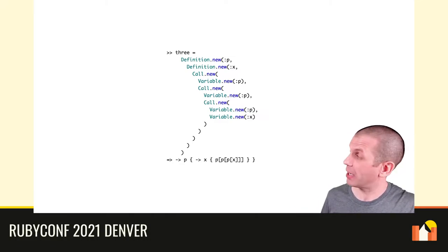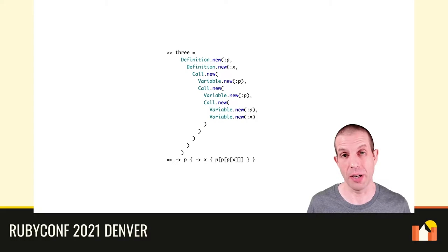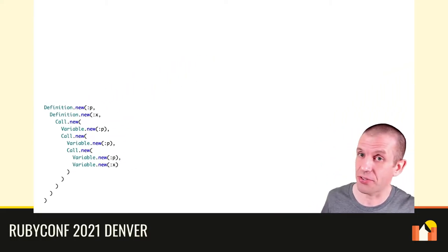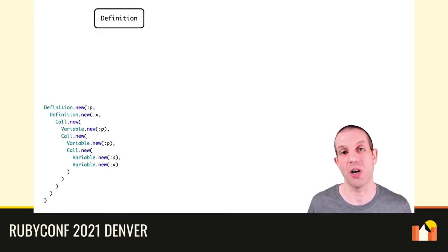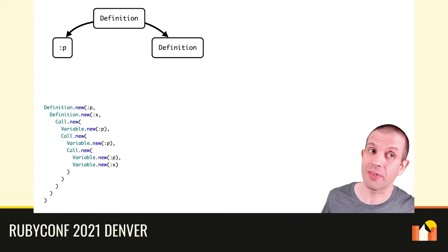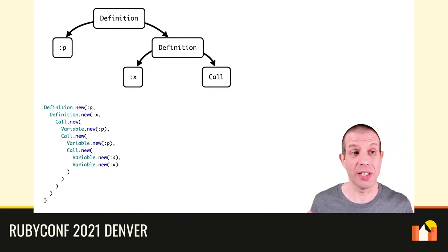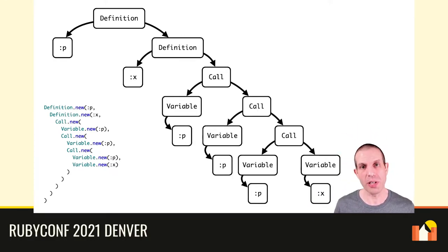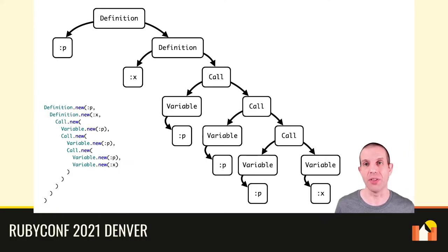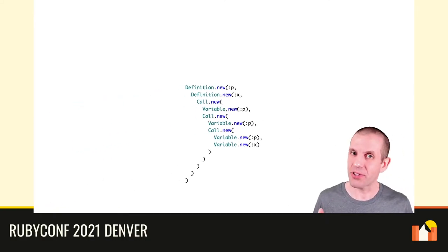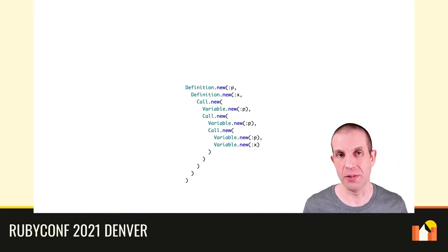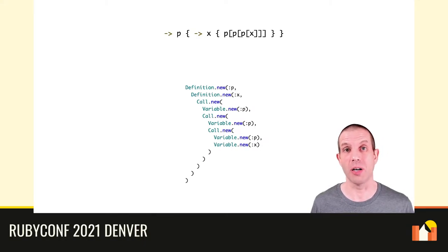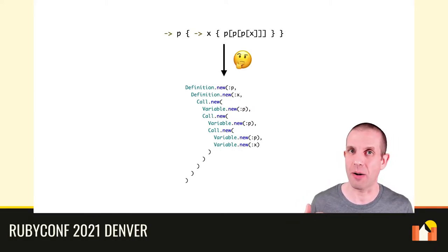As another example, we can make a big inline structure to represent the encoding of the number 3. If we look at the shape of this object, it's really a tree structure — there's a top level definition, within that a parameter name and another definition, then within that another parameter name and a call, then inside that some nested calls and variables. We usually call this kind of structure an abstract syntax tree, so this is the abstract syntax tree of the proc encoding of the number 3.